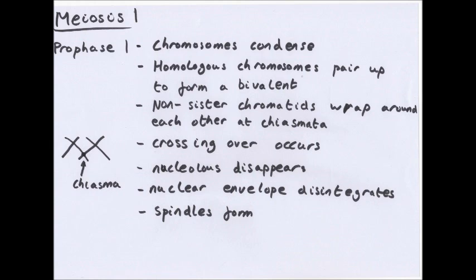Non-sister chromatids wrap around each other. Sister chromatids are the two long thin bits on each chromosome. Non-sister chromatids are ones on different chromosomes. So as you can see, chromatids from two of the chromosomes are wrapping around each other. These are called chiasmata, or chiasma for singular. They may swap sections of chromatids with one another in a process called crossing over.